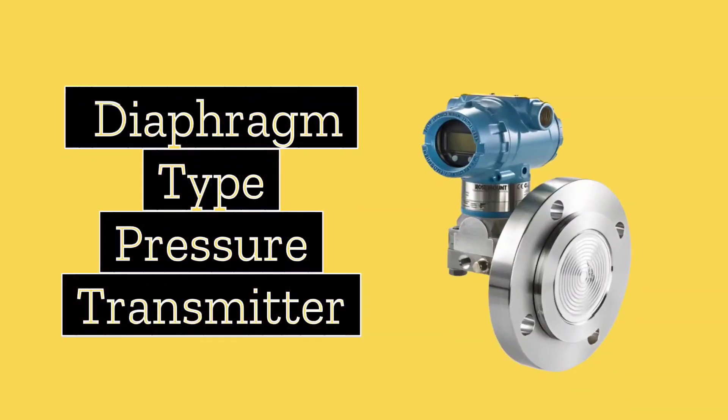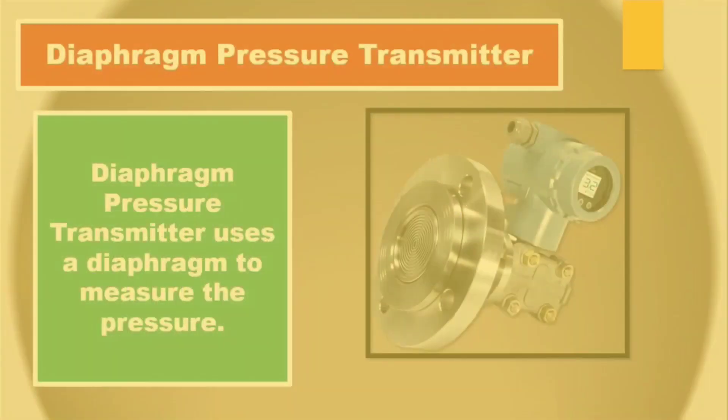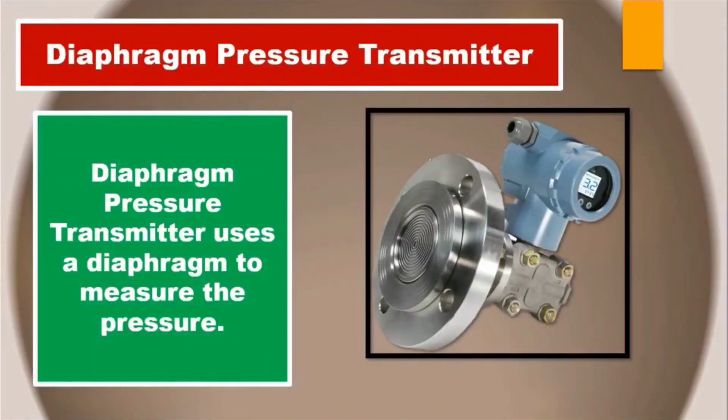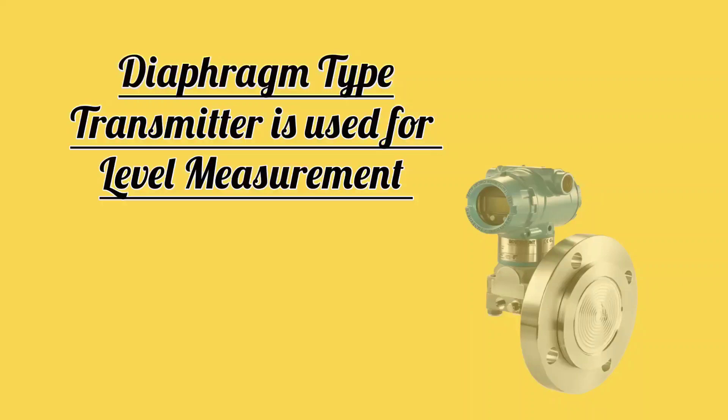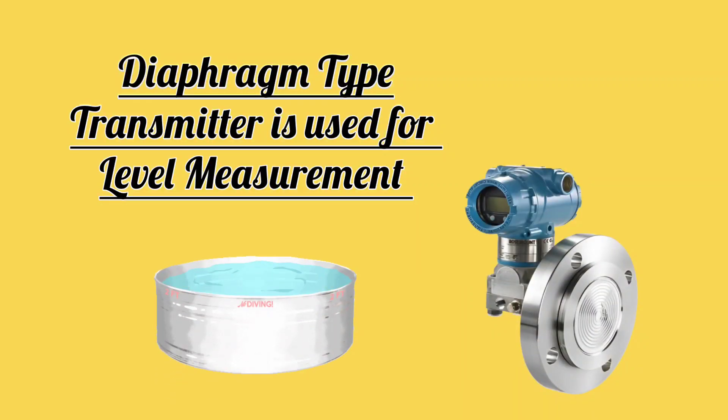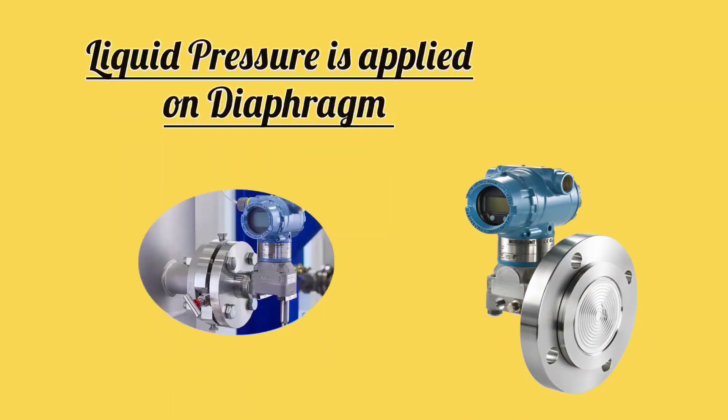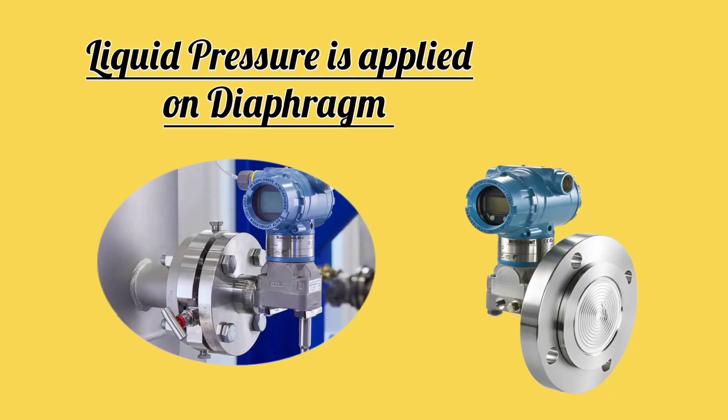Now let us understand diaphragm-type pressure transmitter. Diaphragm pressure transmitter uses a diaphragm to measure the pressure. Friends, diaphragm-type transmitter is used in level measurement. Liquid pressure is applied on the diaphragm and level calculation is done from it.